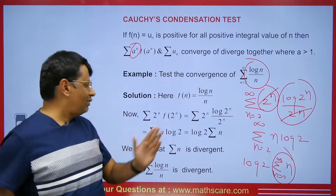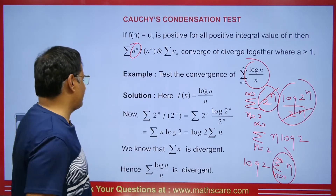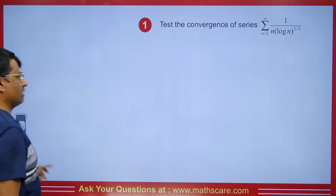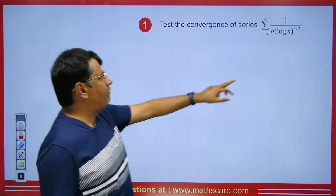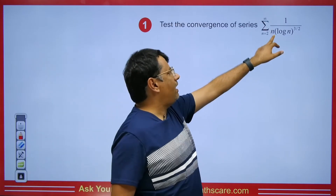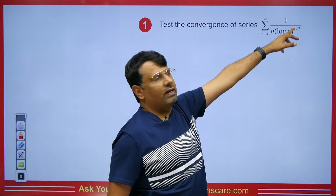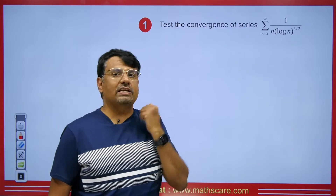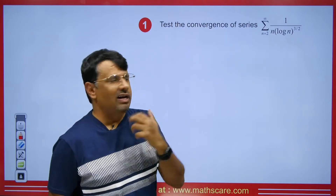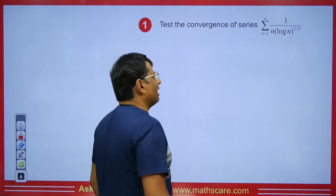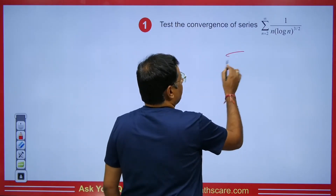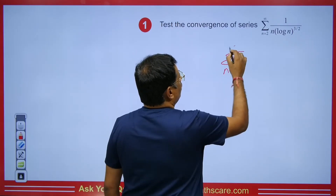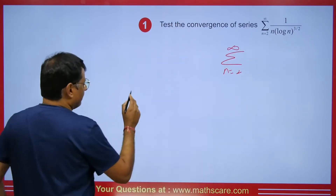You need to understand this — and in the same way, we have proved it here. Let's take another example to understand it better. Let's say we have 1 upon n to the power 3/2. The same rule will be applied here.